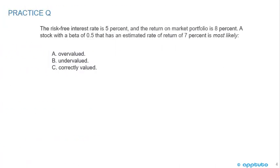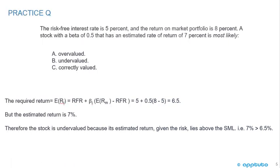First practice question: The risk-free interest rate is 5% and the return on the market portfolio is 8%. A stock with a beta of 0.5 has an estimated rate of return of 7%. Is it most likely overvalued, undervalued, or correctly valued? The correct answer is B — the stock is undervalued. Calculating the required return using CAPM: 5% plus 0.5 times (8% minus 5%) gives a required return of 6.5%, which is less than the estimated return of 7%.